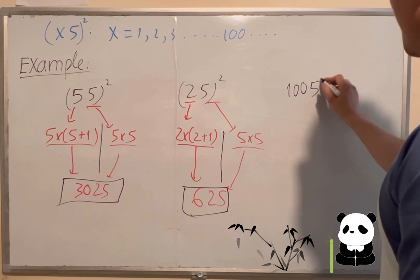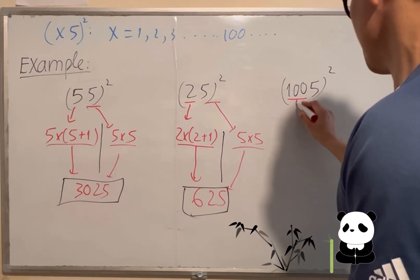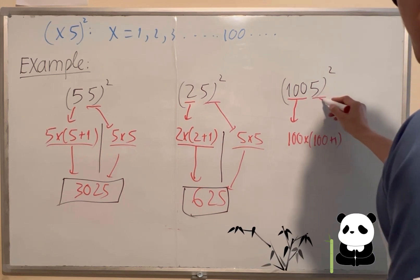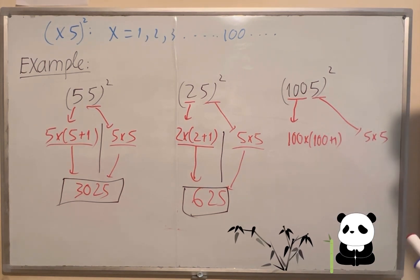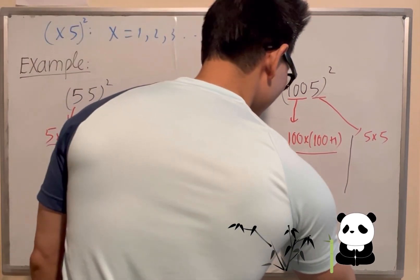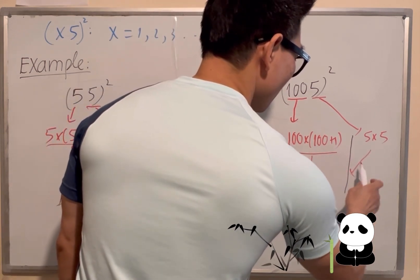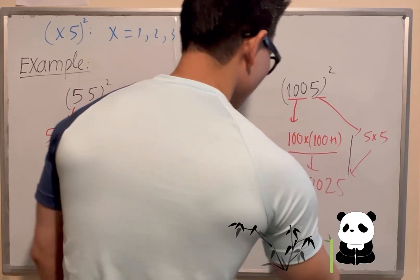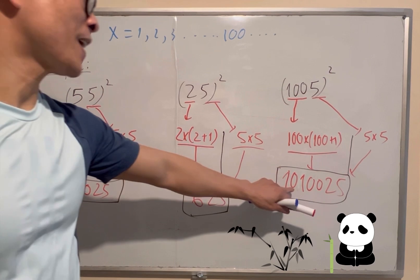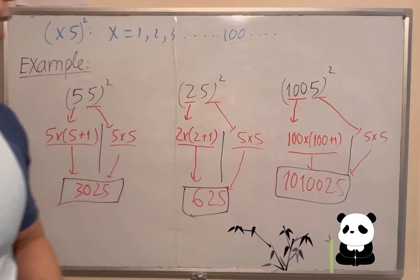Another one: 1005 squared. How do you find the answer? I do the same solution. First, I do 100 times 100 plus 1, which is 100 times 101, and that equals 10,100. Then I calculate 5 times 5 equals 25, and write that down. So the answer is 10,100 and 25, giving 1,010,025.